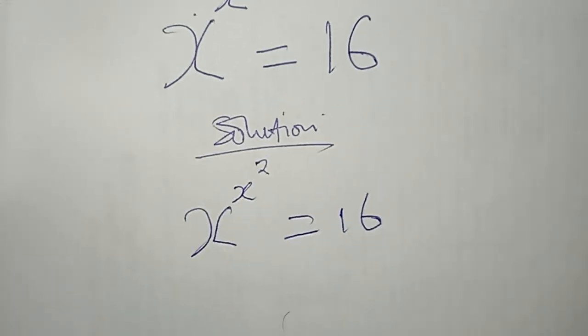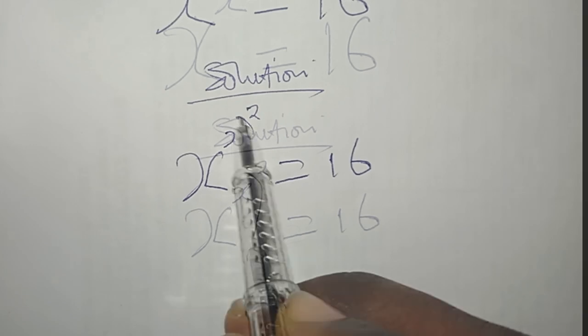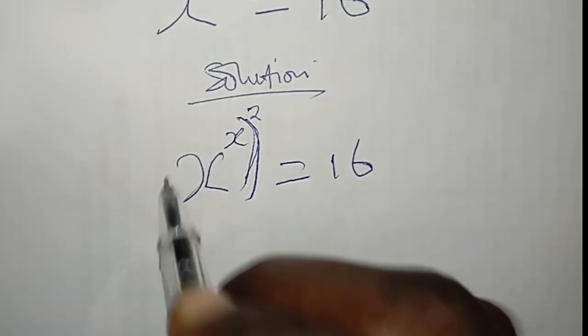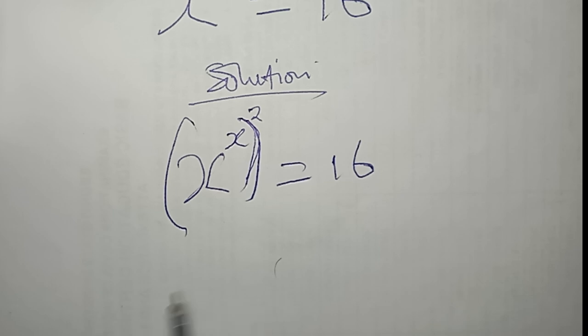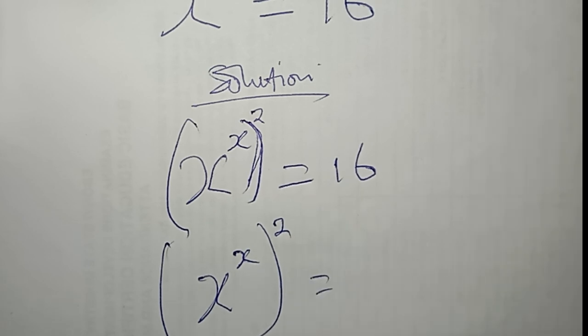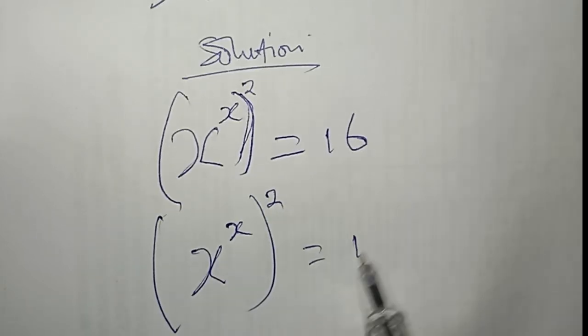So what I'm going to do next is put this in brackets. So that what I now have is (x^x)^2 = 16.